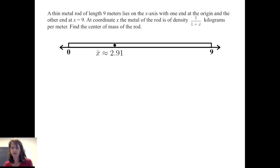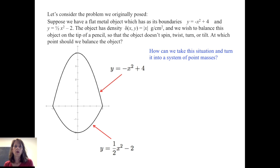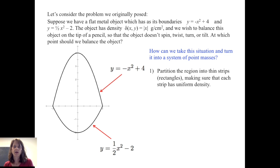Now suppose we go to a more complex problem posed at the start of the first video. We have a flat metal object with boundaries y equals negative x squared plus 4 and y equals one half x squared minus 2. The density is delta of x, y equal to the absolute value of x grams per square centimeter. We wish to balance this object on the tip of a pencil so it doesn't spin, twist, turn, or tilt. The process resembles what we did with the rod: partition the region into thin strips with uniform density.